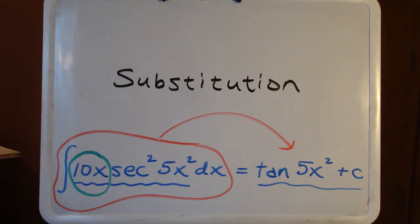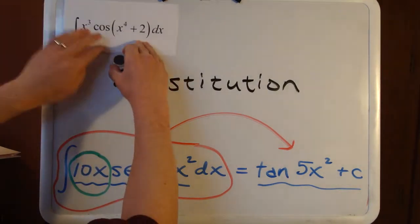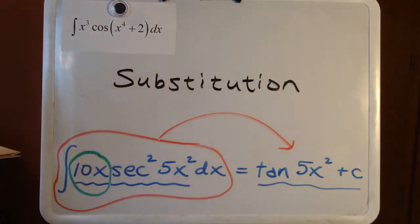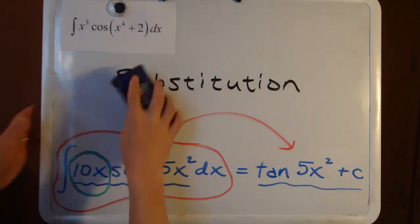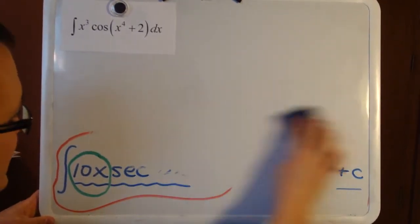What I'm going to do in this lesson is work out a couple of problems so you can get a sense of what it looks like to work these out. Here's our first one: we're going to find the anti-derivative of x cubed times cosine of x to the 4th plus 2, and we're going to use the substitution method.